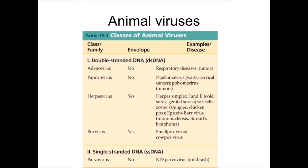We often classify viruses by the type of cells they infect, the symptoms they cause, as well as physical factors like whether they have an envelope and what type of hereditary material they have. You don't have to know the entire list, but it would be useful to know a little bit about some of these viruses — at least a couple of examples.